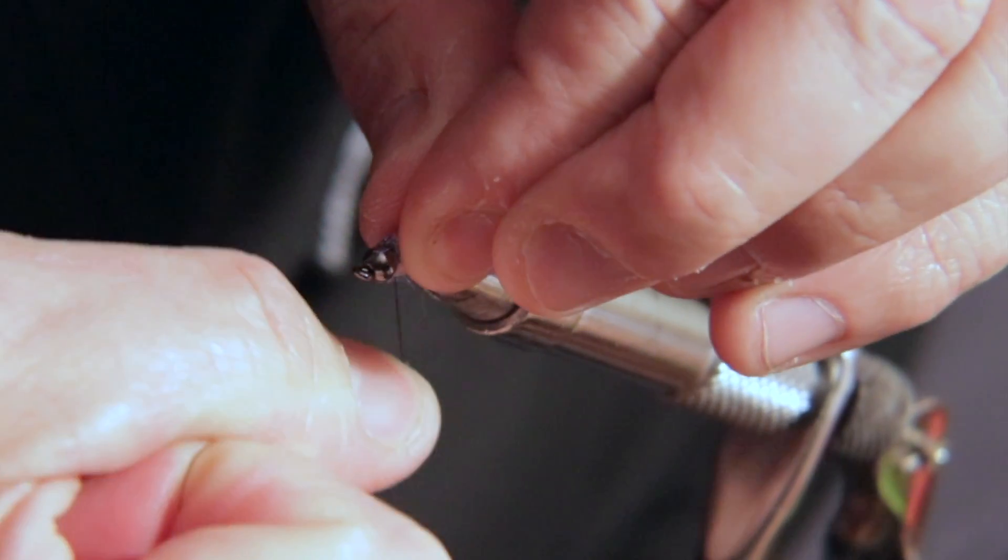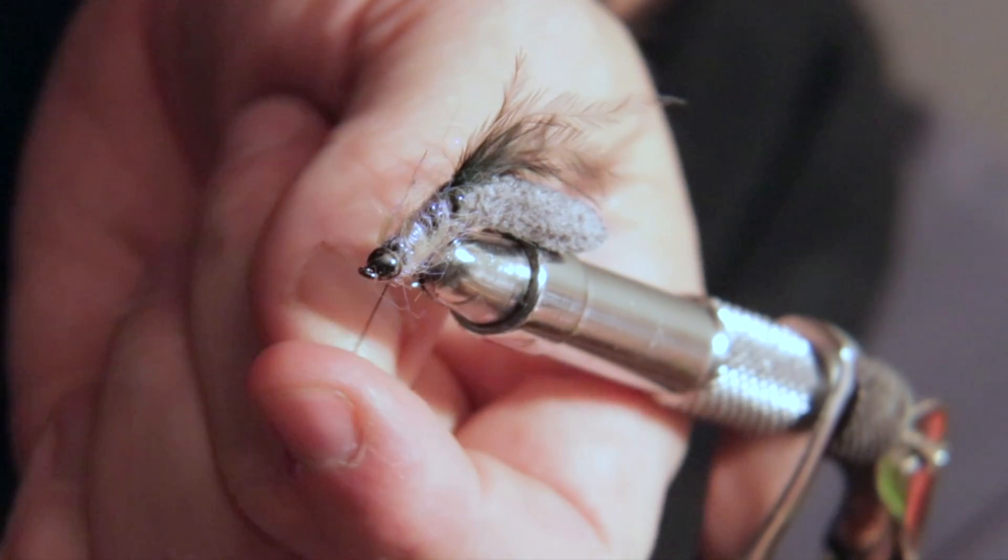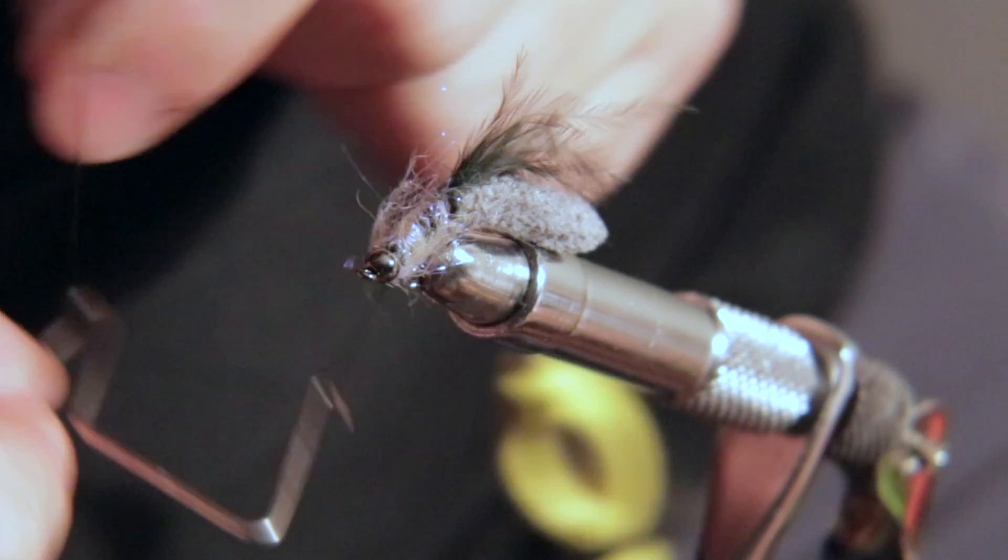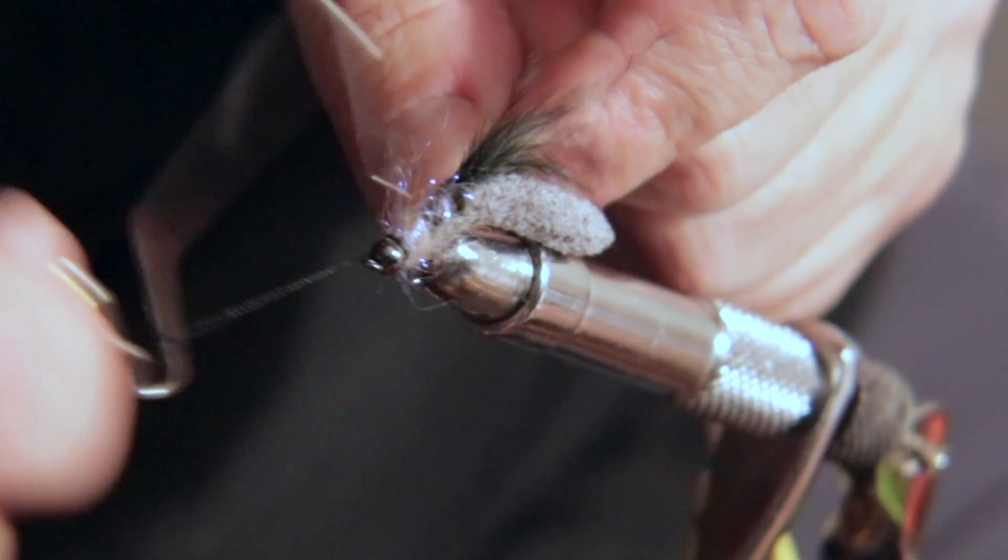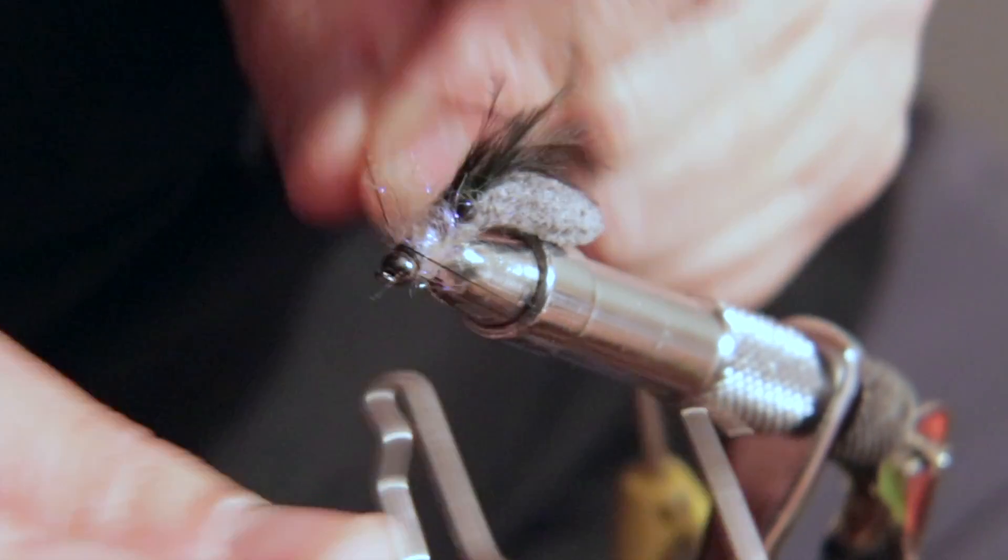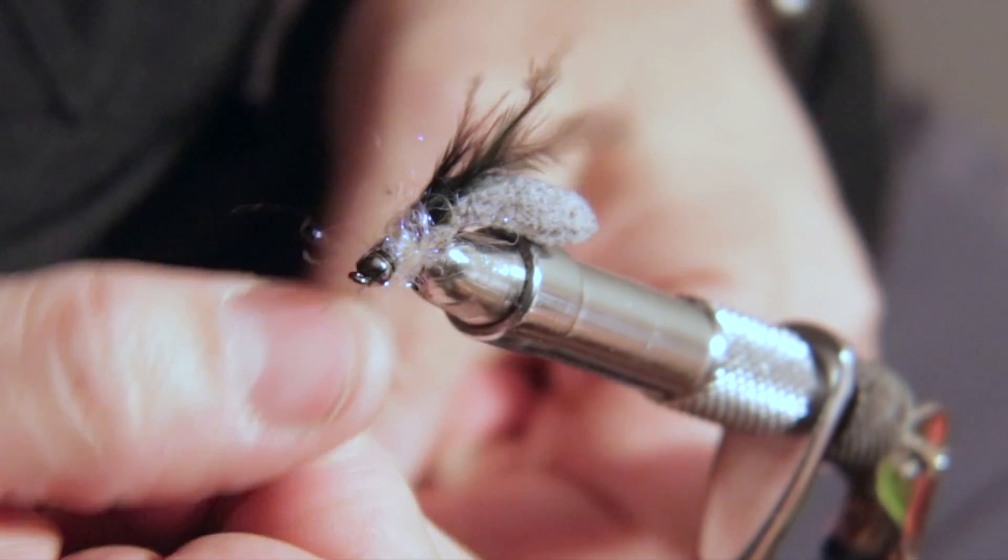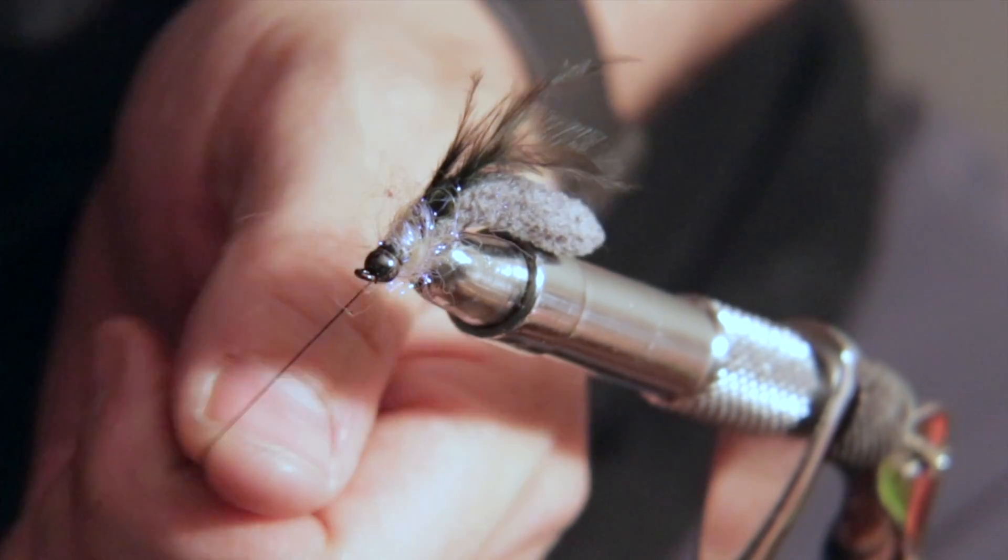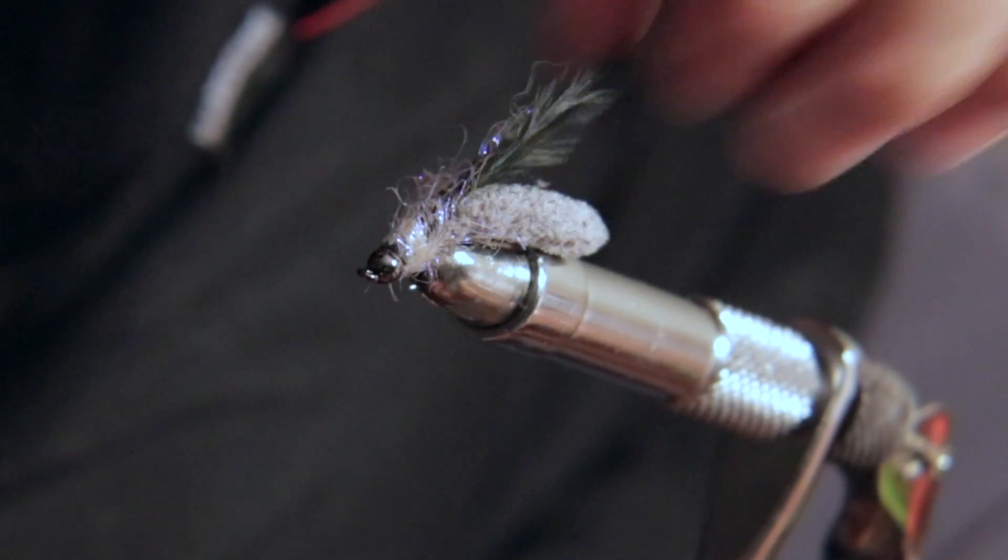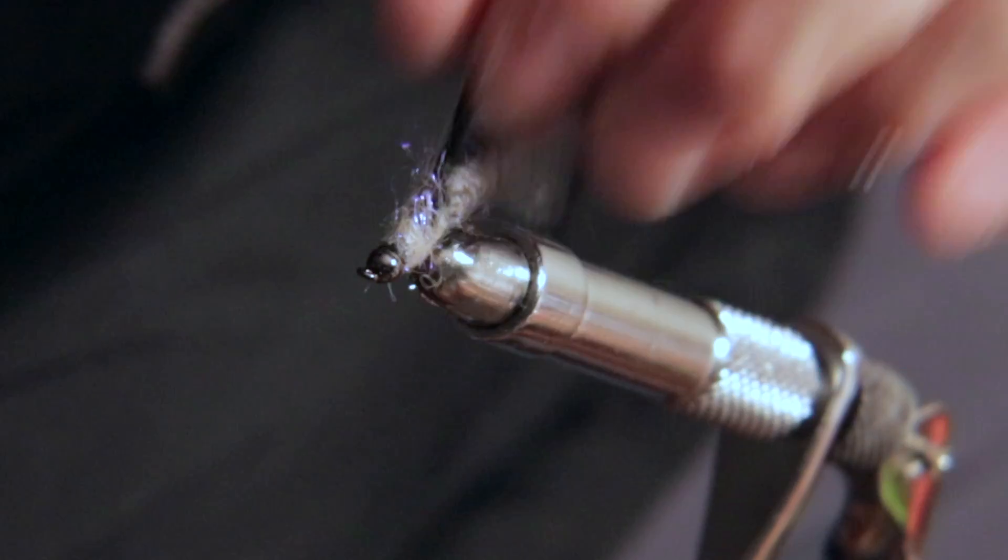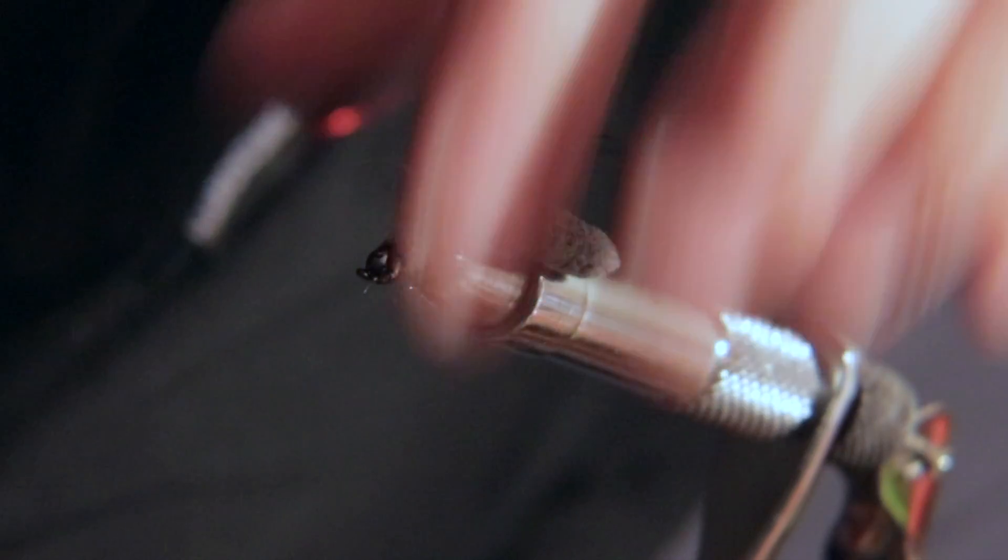So all I did was use a simple mop fly. And then I'm going to go ahead and whip finish. Get it up there four times, pull it nice and tight. Trim off my excess string. And really at the end of the day, that's it. That's just how simple this is.